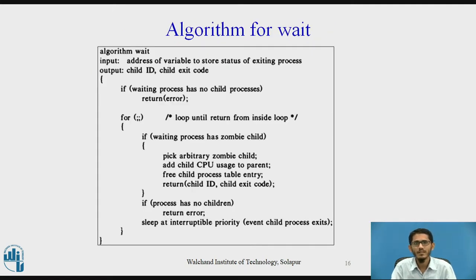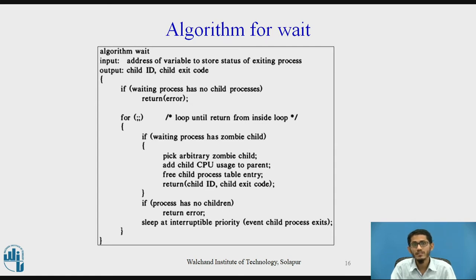This is the algorithm for wait. The kernel searches for a zombie child of the process, and if there are no children, returns an error. If it finds a zombie child, it extracts the PID number and the parameter supplied to the child's exit call and returns those values from the system call. An exiting process can specify various return codes to give the reason it exited, though many programs do not consistently set it in practice. The kernel adds the accumulated time the child process executed in user and kernel mode to the appropriate fields in the parent process U area, and finally releases the process table slot formerly occupied by the zombie process. That slot is now available for a new process.